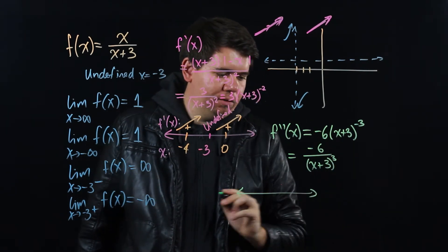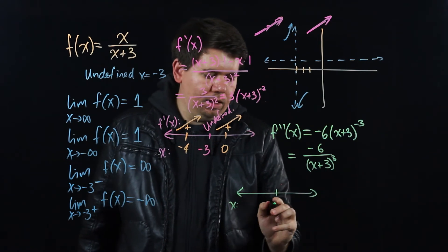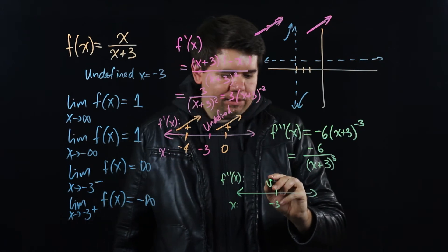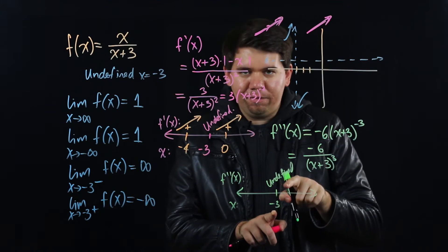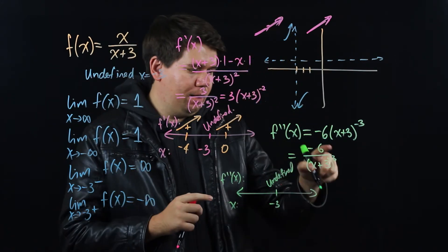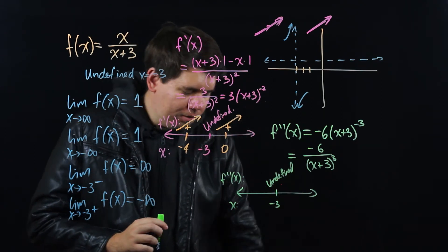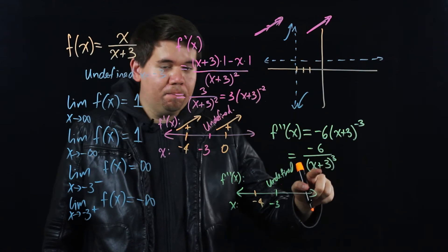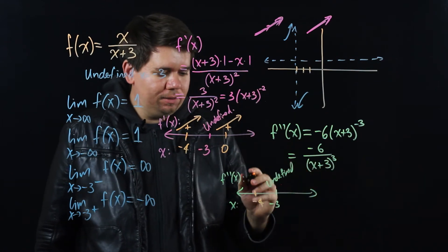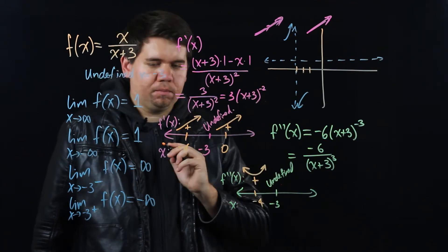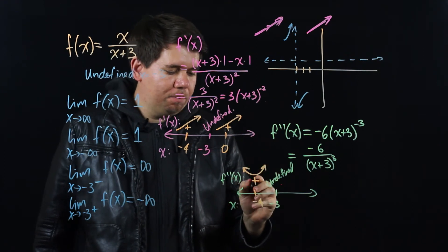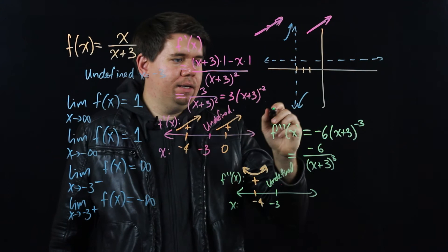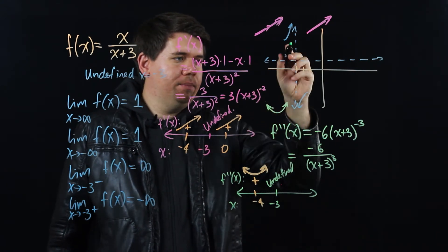On the second derivative number line, x = -3 is again undefined. For values less than -3, like -4: (−4+3)³ = (−1)³ = −1, so the second derivative is −6 divided by −1 = positive 6. Positive second derivative means concave up, so the graph bends upward when x is less than -3.